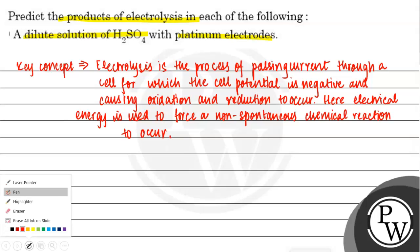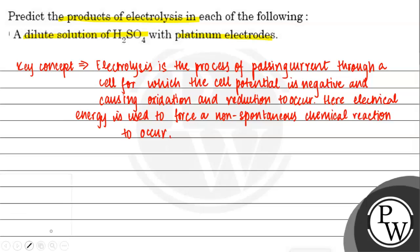Now let's look at this question. It tells us about a dilute solution of H₂SO₄ with platinum electrodes.